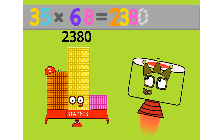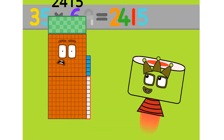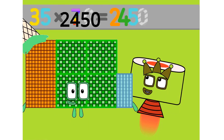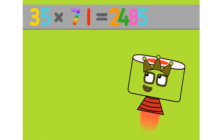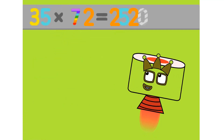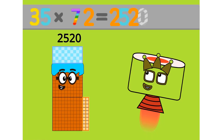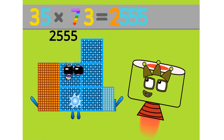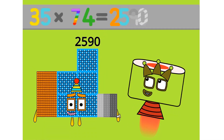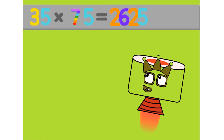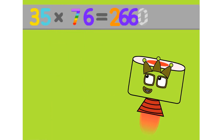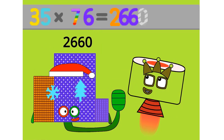35 times 68 equals 2380. 35 times 69 equals 2450. 35 times 71 equals 2485. 35 times 72 equals 2520. 35 times 73 equals 2555. 35 times 74 equals 2590. 35 times 75 equals 2625. 35 times 76 equals 2660.